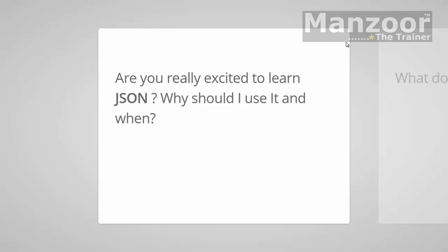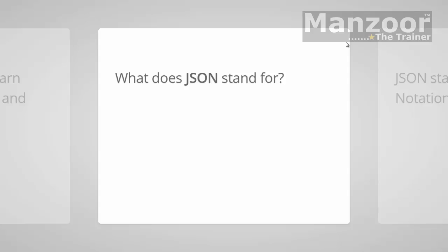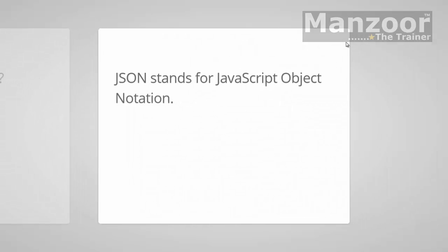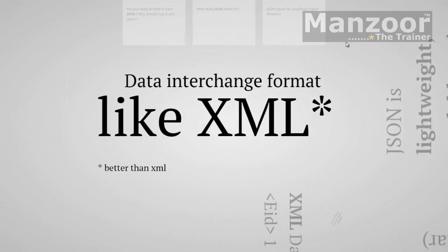Are you really excited to learn JSON? Why should I use it and when? First of all, let us see what JSON stands for. JSON stands for JavaScript Object Notation — it is a format based on JavaScript syntax, a format of data. Basically, JSON is a data exchange format.